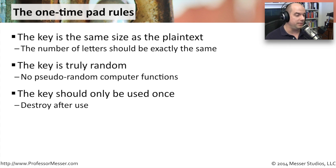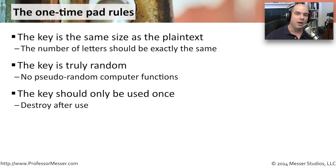A one-time pad can be used in many different ways, but the key should only be used one time. One of the nice things about having this on a piece of paper is that after we use the key to encrypt on one side and decrypt on the other, we throw away the key. You pull off that piece of paper from the pad, burn it, and get rid of it. There will obviously be another key to use next time.